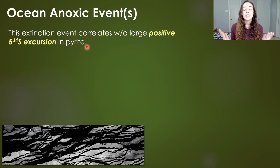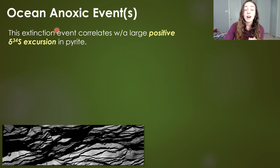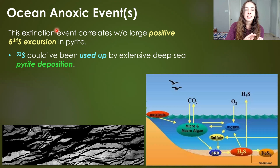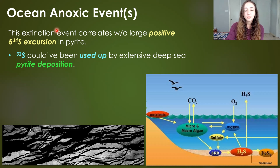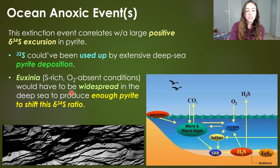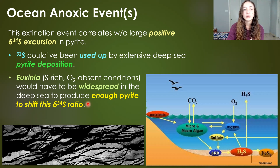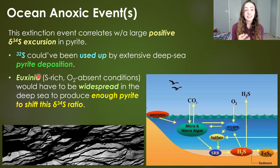However, the cooling and sea level drop were not the only things that contributed to the extinctions. The first pulse of extinctions correlated with a positive sulfur isotope excursion in pyrite. Sulfur-32, the light isotope, could have been used up by extensive deep-sea pyrite deposition, representing sulfide-rich and oxygen-lacking conditions called euxinic conditions, because these conditions would have had to be widespread to produce enough pyrite to create this shift in the sulfur isotope ratio. The resulting euxinia and anoxia would have been toxic to oxygen-breathing benthic animals.